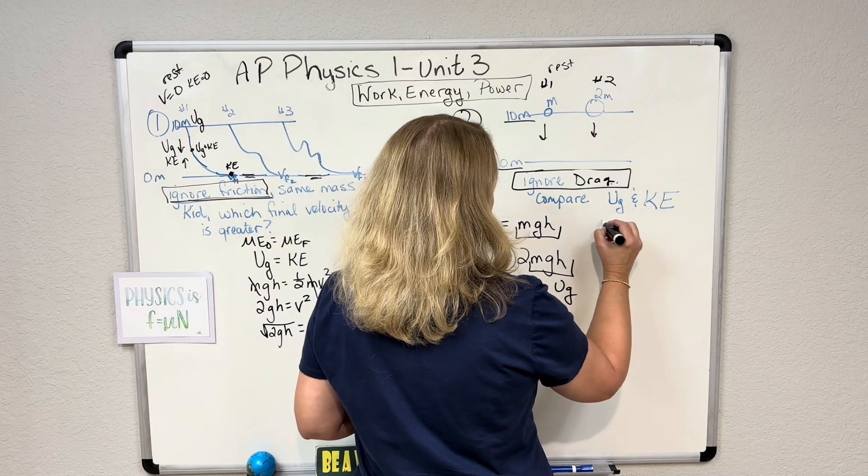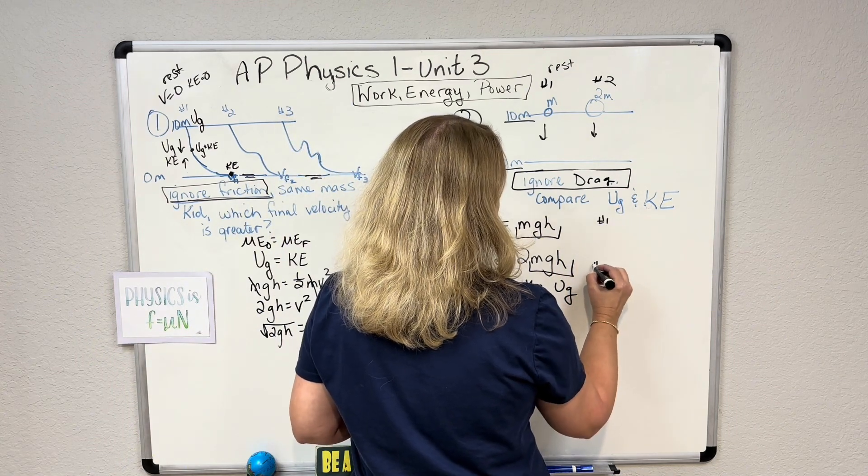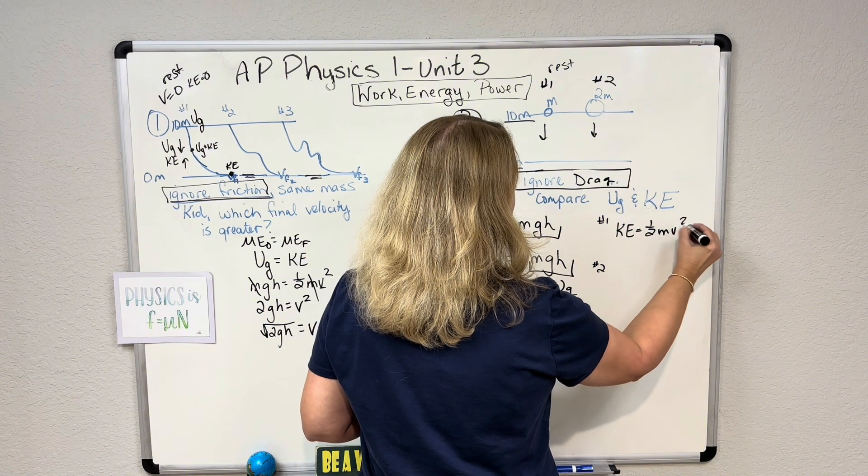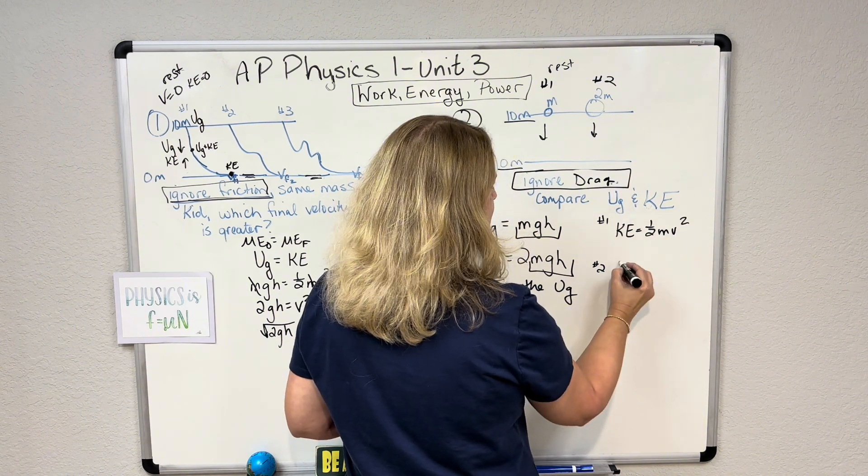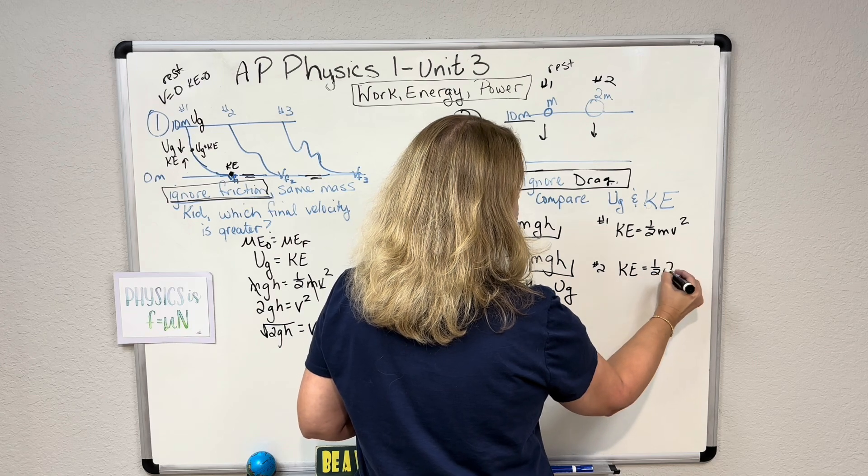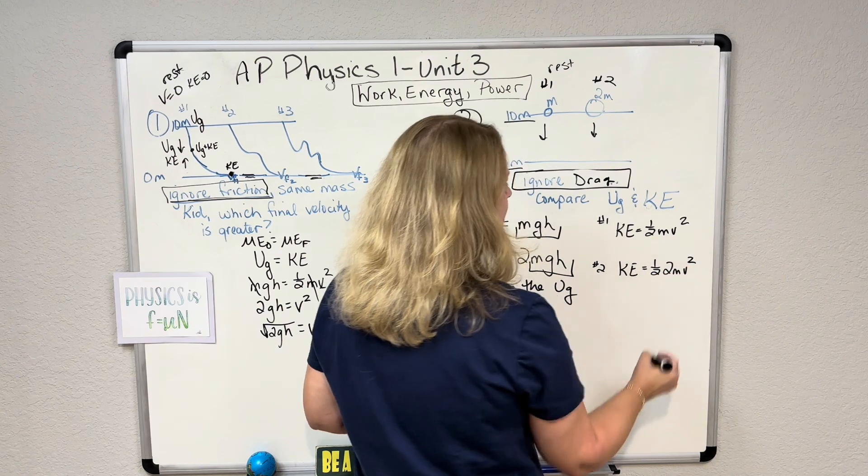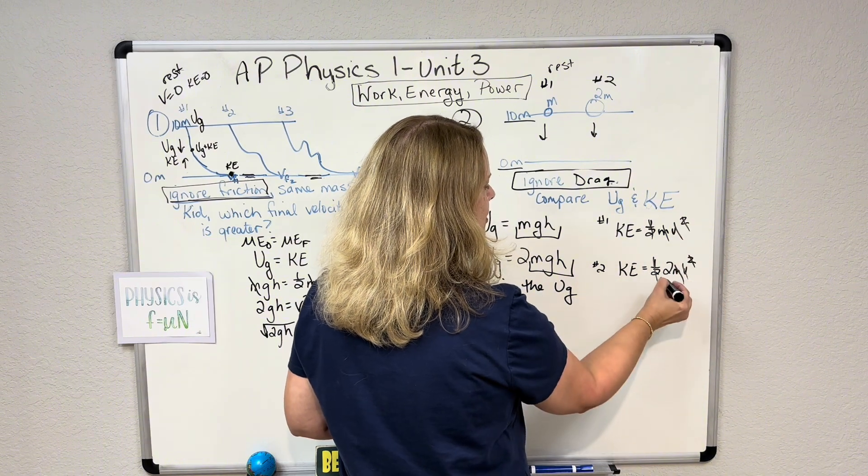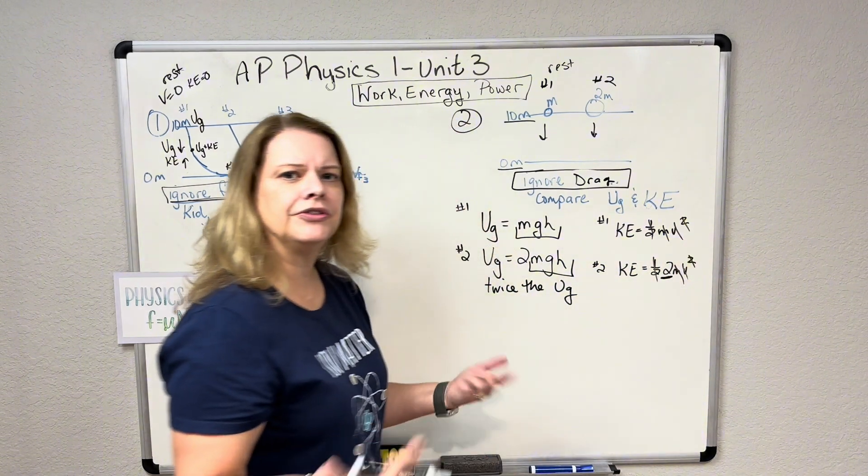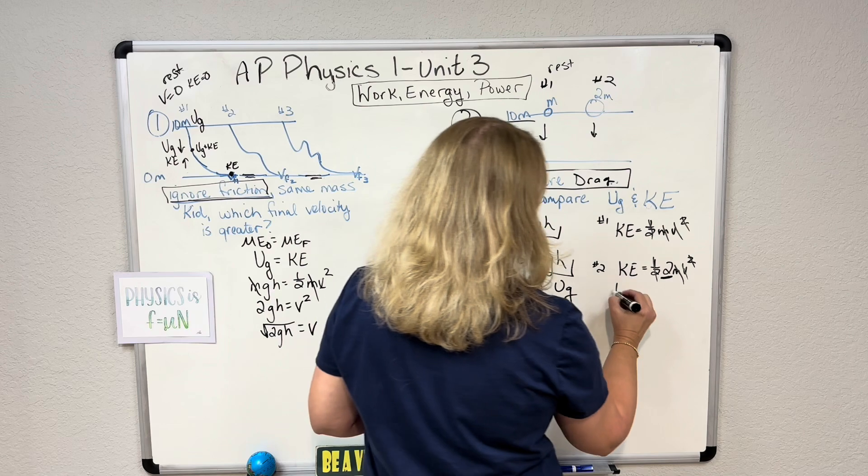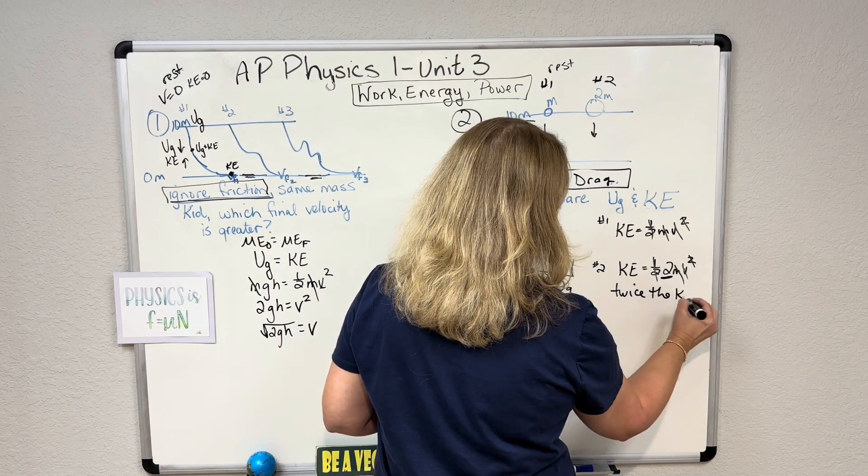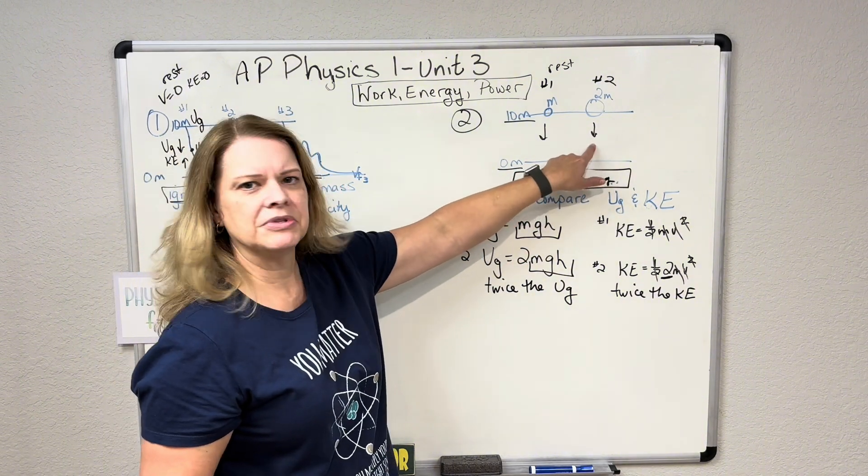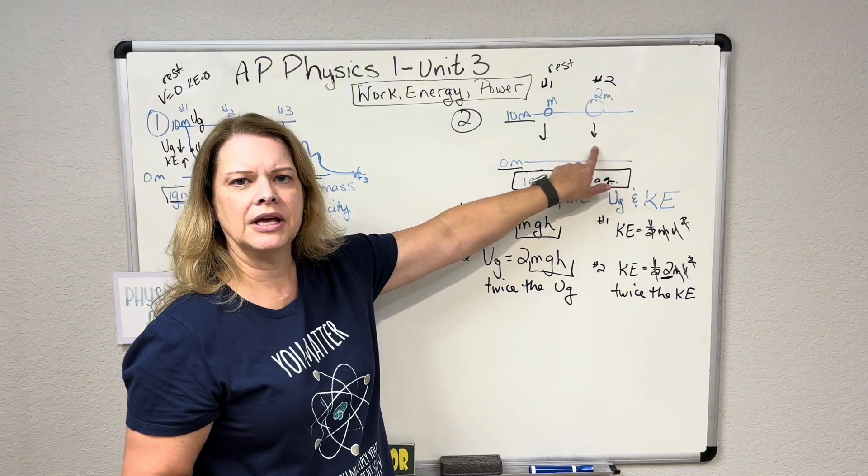Now let's look at kinetic energy. We're going to do object 1 and object 2 again. Well, kinetic energy is 1 half MV squared. For the first one. For the second one, again, just put in double. 1 half 2MV squared. Look, they both have a half. They both have a mass. They both have a velocity squared. When I'm comparing, the only difference is the 2. So this one has twice the kinetic energy as well. So object 2 has twice the potential energy. It also has twice the kinetic energy.